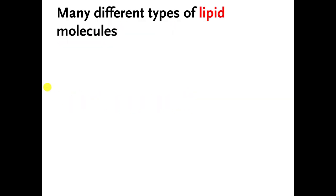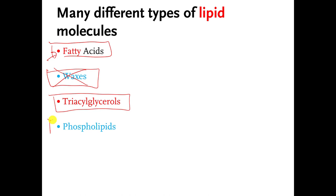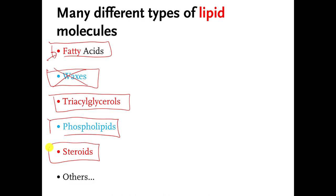There are many different kinds of lipid molecules. There are lipid molecules called fatty acids — we will discuss these. There are lipid molecules that are waxes — we're not going to discuss those. There are lipid molecules called triacylglycerols — we will discuss those. There are others called phospholipids, and still others called steroids, which you may have heard of. We will briefly discuss those as well.